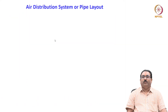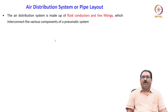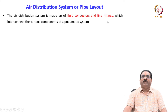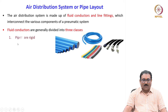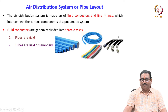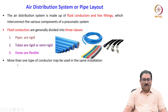The air distribution system or piping layout consists of various fluid conductors and line fittings, which interconnect the various components of the pneumatic system. Fluid conductors are generally divided into three main classes: pipes, which are rigid; tubes, which are rigid or semi-rigid; and hoses, which are flexible. More than one type of fluid conductor may be used in the same installation.